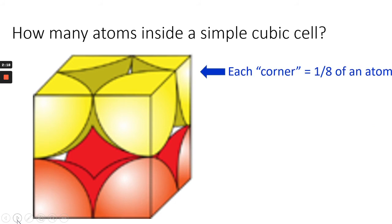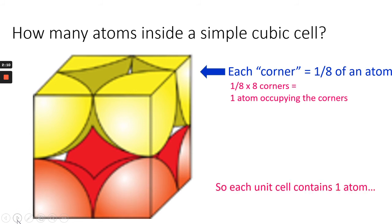So inside a simple cubic cell, each corner is an eighth of an atom, and there's eight corners, so therefore you have one atom occupying the corners. No other atoms or ions inside the cube, so each unit cell contains one atom.